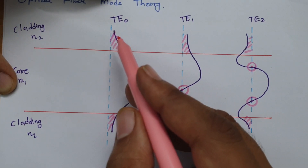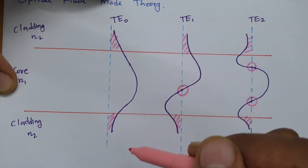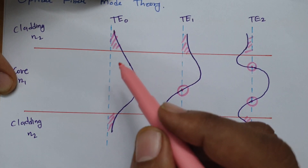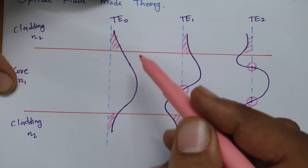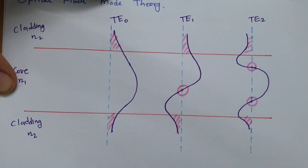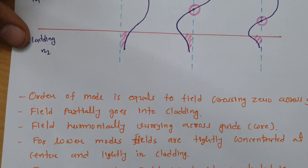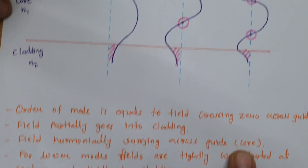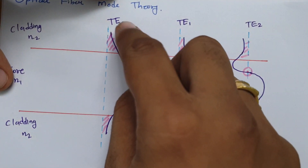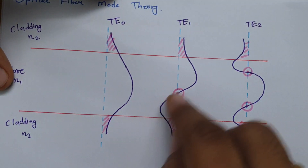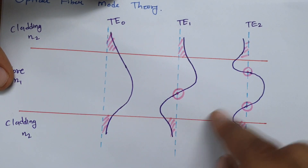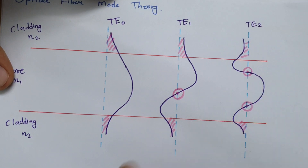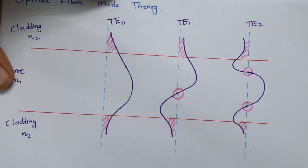Practically, this field going inside the cladding is undesirable — it should not go into the cladding, but because of the mode pattern, a fractional amount of field will always go into the cladding. Also, the field harmonically varies across the guide: for TE0 it varies like this, for TE1 like this, and for TE2 like this.